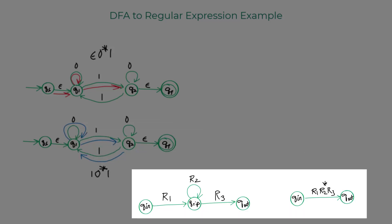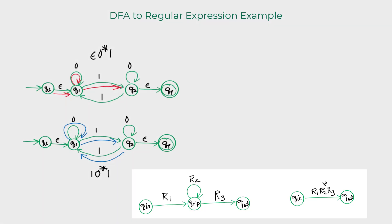Remember this concept which we discussed just before. So I'm going to simplify both the red path as well as the blue path following this concept. So I end up with the regular expression epsilon 0 star 1 for the red path and 1 0 star 1 for the blue path.